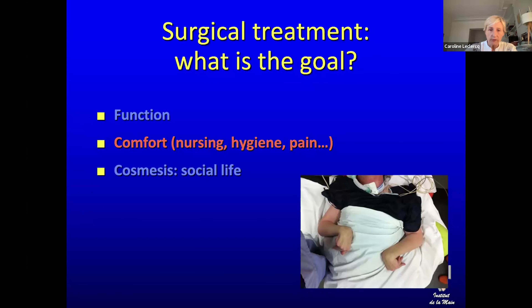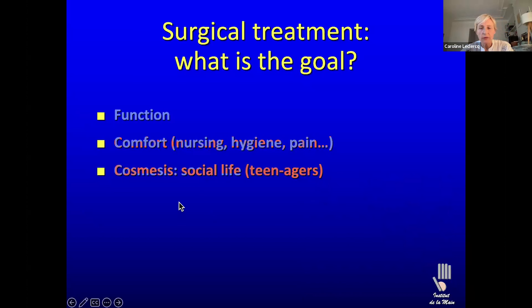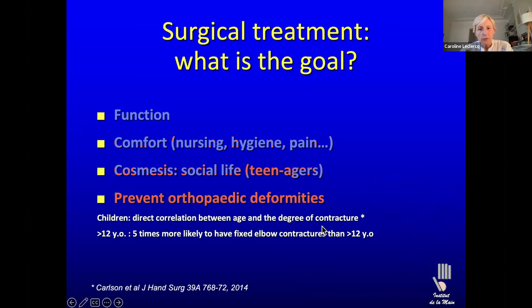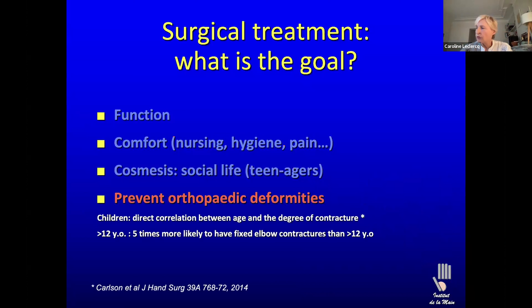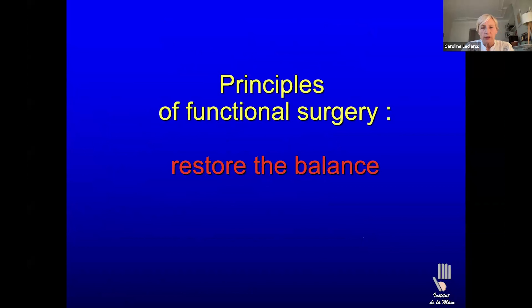Now we have been examining the patient — what can we do for them? First we need to understand what we can and cannot do. Spasticity we can improve. Muscle contracture we can improve. Joint contracture we can improve. Muscle paralysis — not always, because you need another muscle or nerve to transfer to that paralyzed muscle. We are not going to be able to improve sensory deficit, and as I said, dystonia — we surgeons don't know how to help with that.